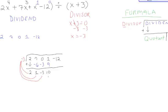1 plus 9 gives us 10. 10 times negative 3 gives us negative 30. We go ahead and add those last two numbers, negative 12 plus negative 30 gives us negative 42.